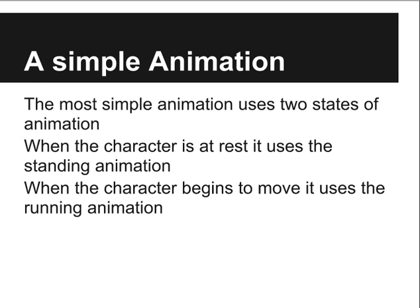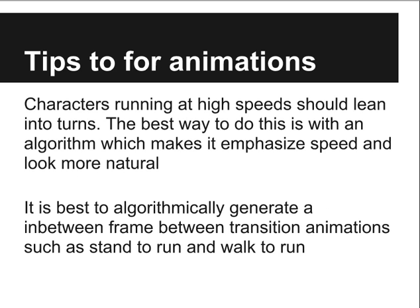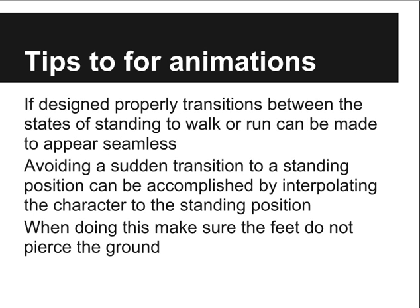A character can have a very simple animation composed of two animation loops: the first being the standing animation loop and the second being the running animation loop. The paper presents a few tricks for creating good animations. These include creating animations to match the desired speed — we can slow the speed of an animation, but it will only look good if it is close to the intended speed. Additionally, a character running at full speed should algorithmically lean into its turns, and should also algorithmically generate a transition frame between two different animation loops. If done correctly, an animation between standing and walk can look seamless.